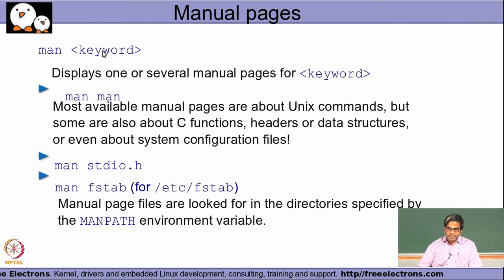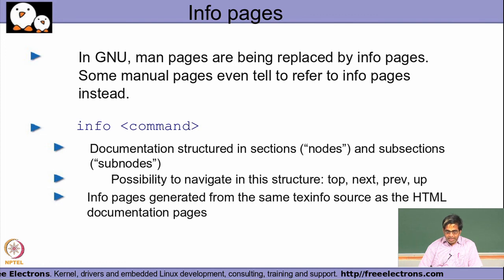The man command tells you the different ways of using a command, how each option changes behavior, what error messages to expect, and what related commands exist. It is extremely useful as a quick reference cheat sheet. Similarly, the info command gives more details than man, including associated commands and their relationships and dependencies with the given command.